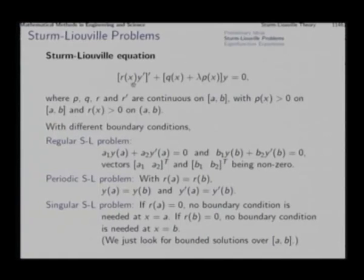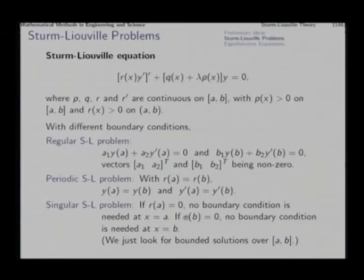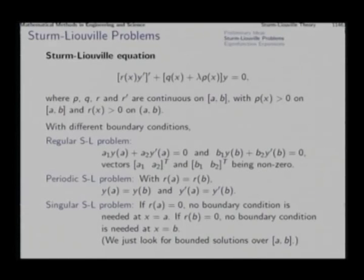In a singular Sturm-Liouville problem, if r(a) = 0 at one boundary then we do not need a boundary condition there; if r(b) = 0, then we do not need one at x = b. In that case, while solving the boundary problem we simply look for bounded, continuous solutions over [a, b] that do not become undefined.